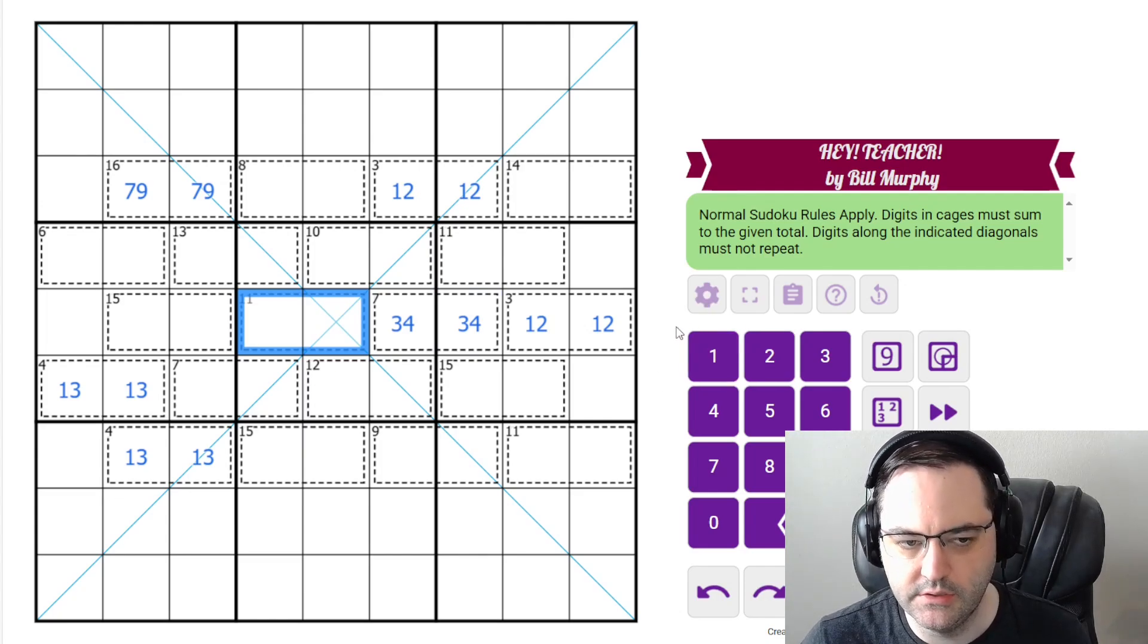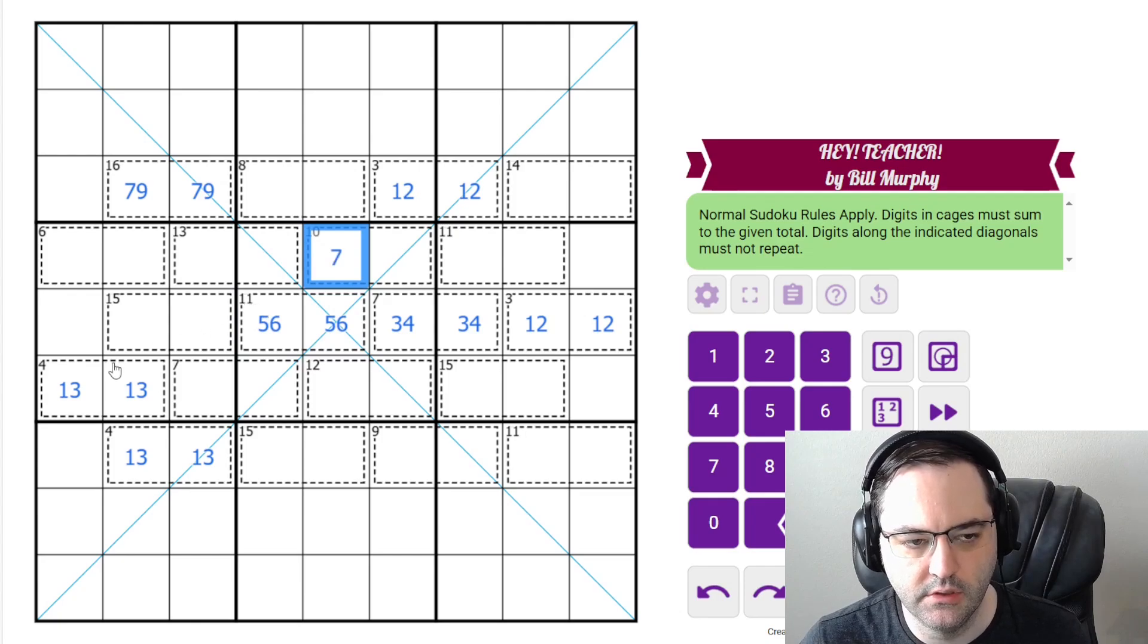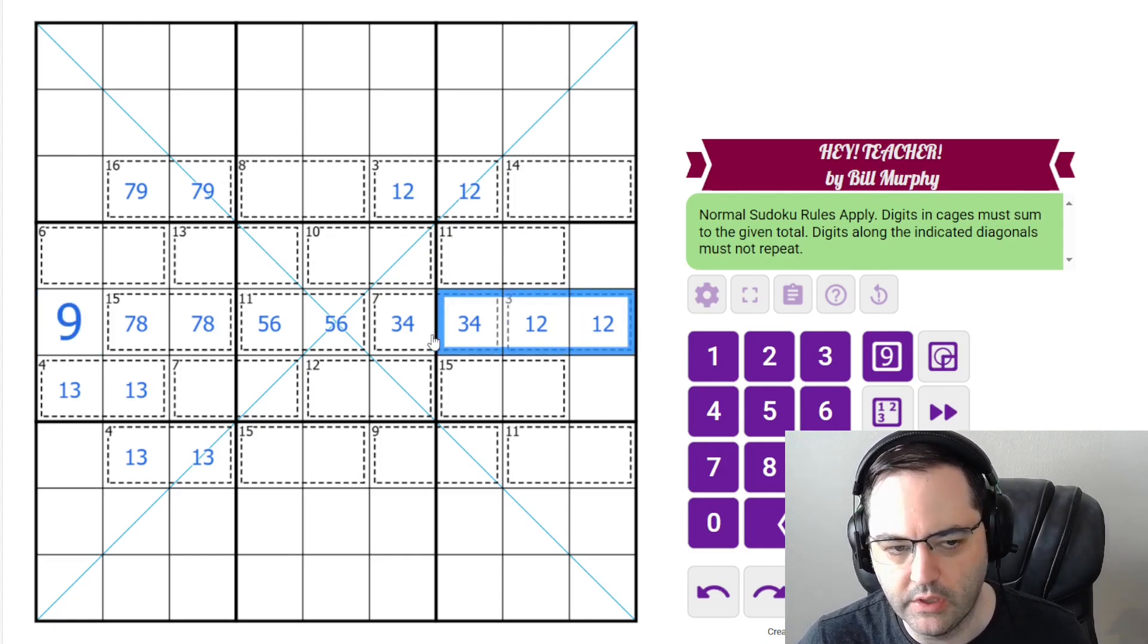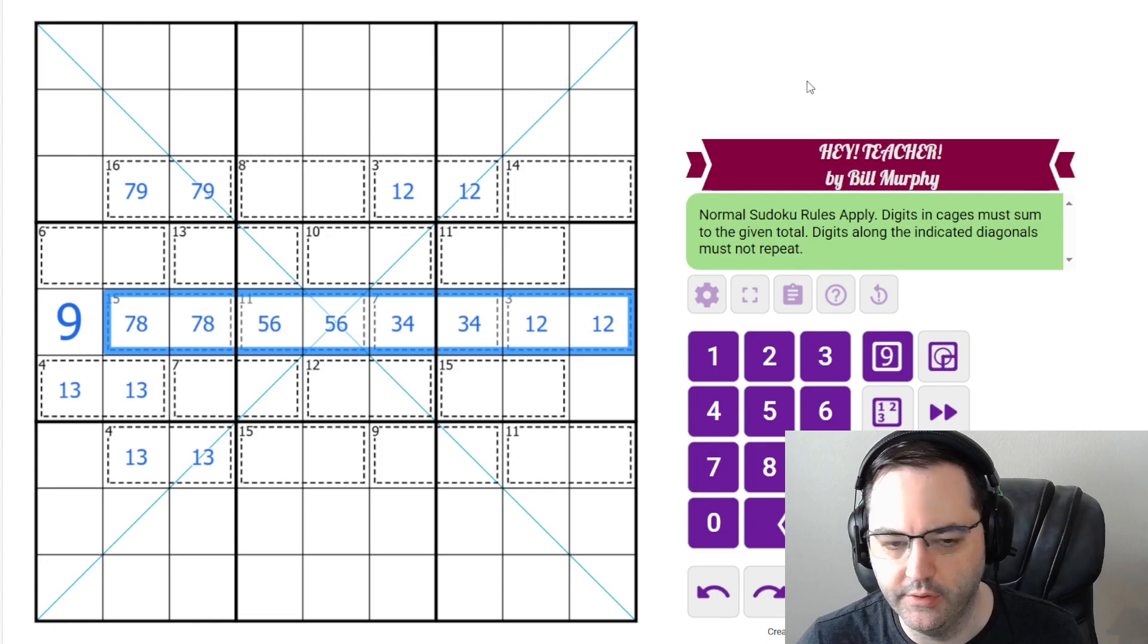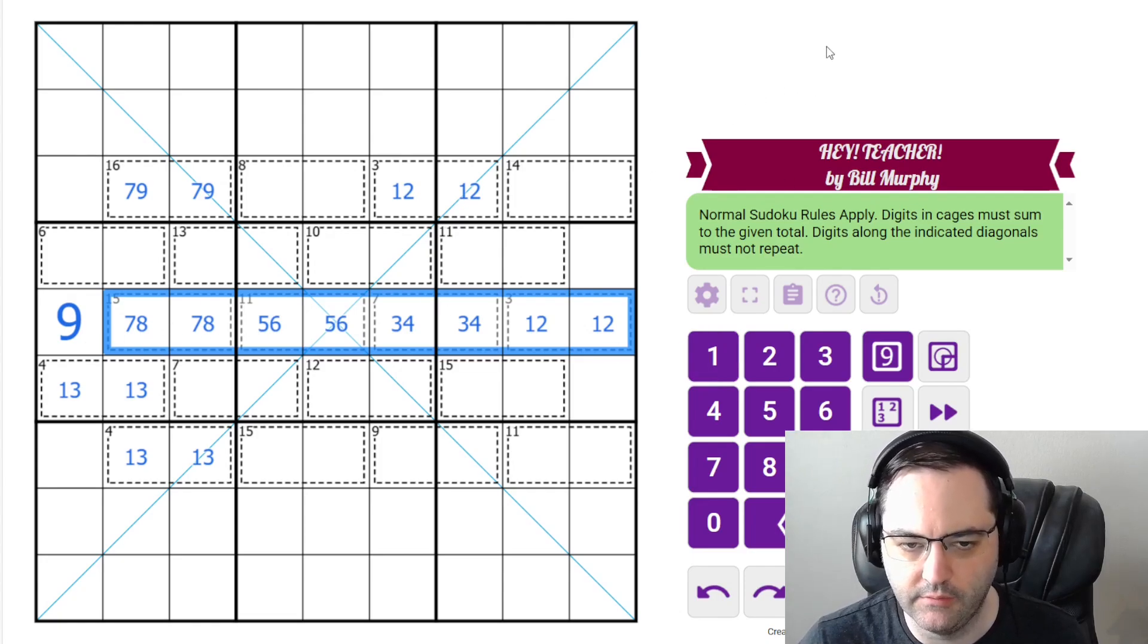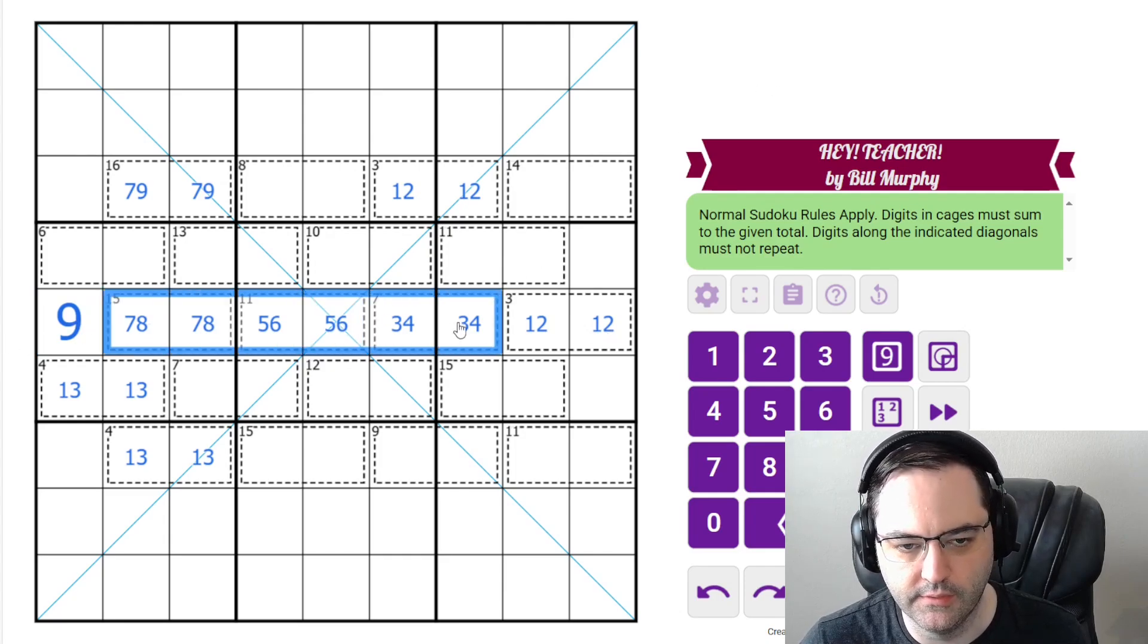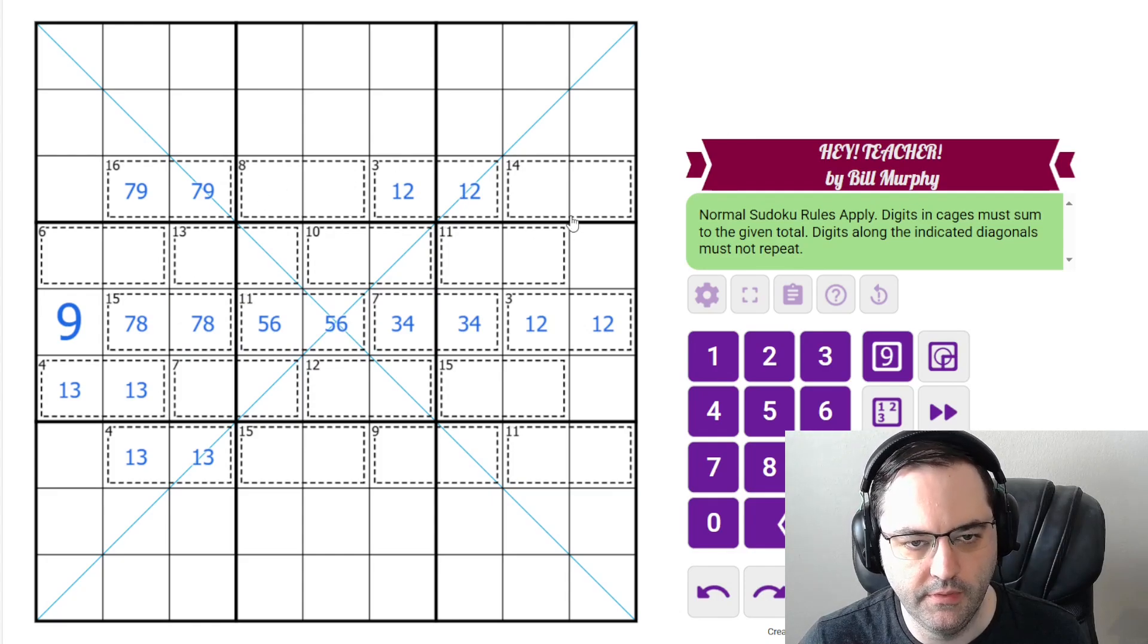The lowest we can have now in this cage is 5, 6, and that's 11, which is the total for that cage. And then the 15 must be 7, 8, and we're left with a 9. We could add up all the cage totals and subtract that from 45. In this case, we would get 36 here. 45 minus 36 is 9. That is a useful tool for killer as well.